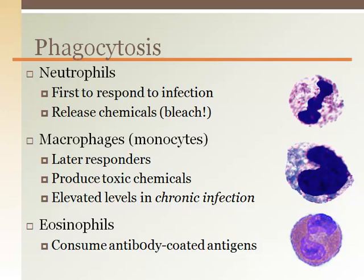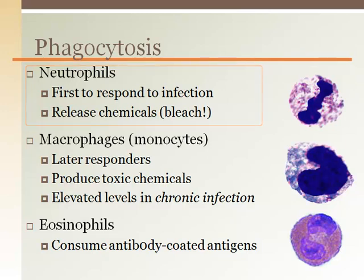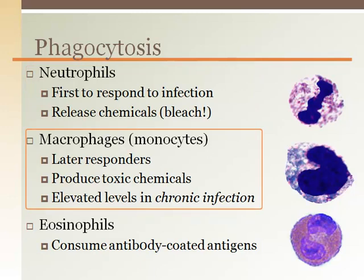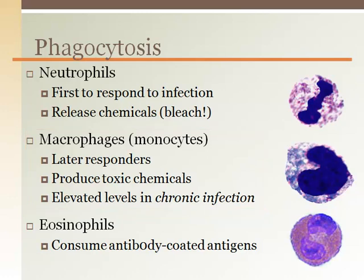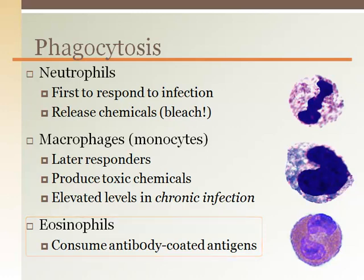Phagocytosis is important in repair of areas of damage as well as consuming and eliminating antigens to prevent rapid proliferation in our body. Neutrophils are most numerous in the blood, so they often attack first, releasing their bleach-like chemical and then ingesting the antigen. Macrophages are excellent phagocytes and increase in numbers as the infection continues. Eosinophils also consume antigens but are often working with the specific or acquired level of immunity, removing the antigen after it has been identified and coded with antibodies.